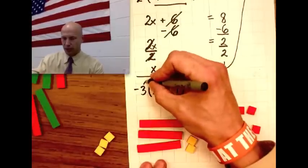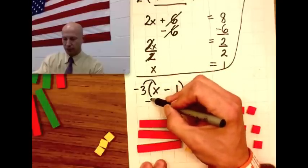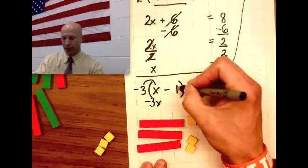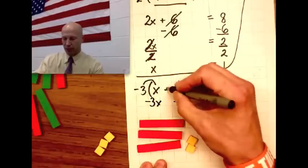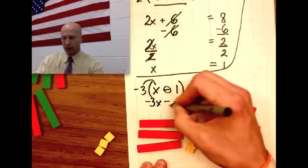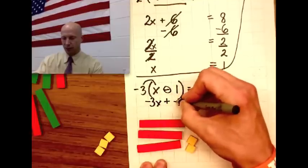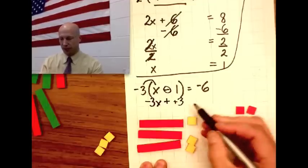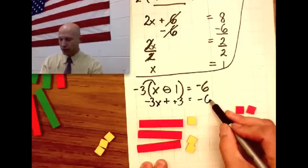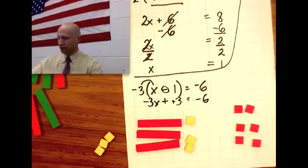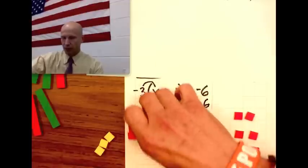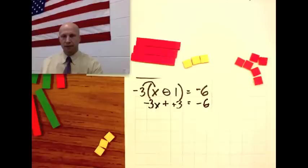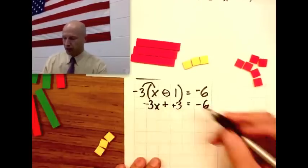Let me rewrite my equation now. Negative 3 times x is negative 3x. Negative 3 times 1 is negative 3, and it's minus, so it stays minus. Negative 3x minus negative 3 is negative 3x plus positive 3. So negative 3x plus positive 3 equals negative 6.